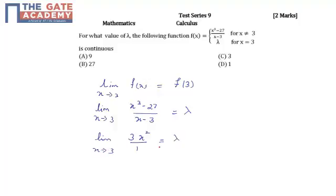Now if you put x equal to 3, finally we will get lambda is equal to 27. Lambda equals 27, which is option B. Thank you.